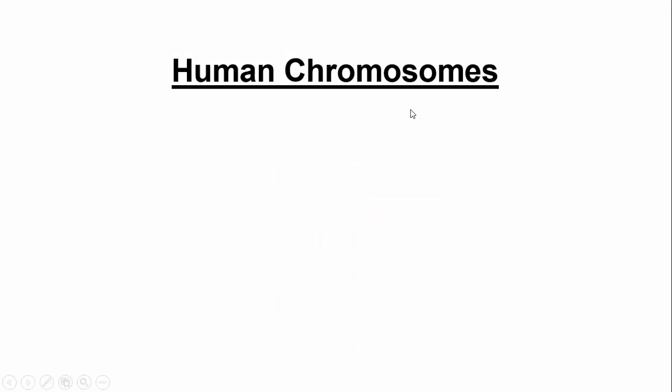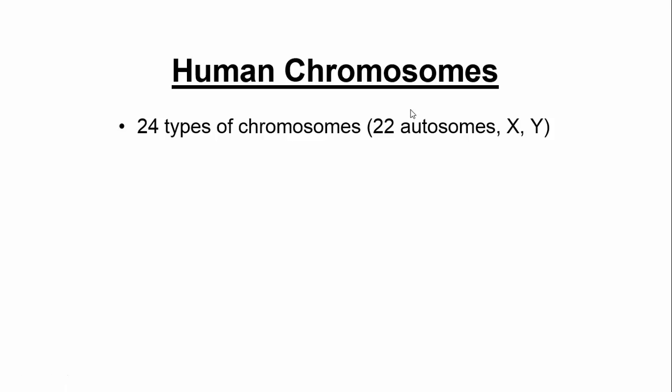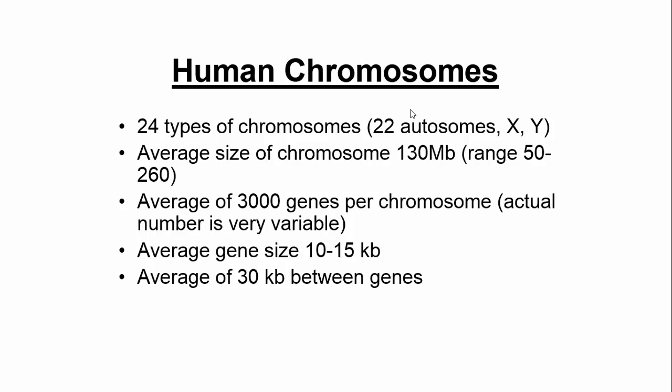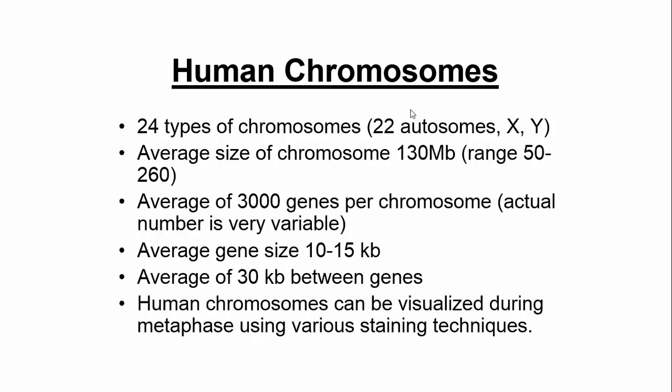Finally, just to review human chromosomes: humans have 23 types of chromosomes. Some people classify X and Y differently, saying X is the 23rd type and Y is the 24th, but most people say 23, treating X and Y as a pair. The average size of chromosomes, number of genes per chromosome, gene size, and distance between genes — none of these are information you need to memorize, except for the first bullet point: 23 pairs. The numbers are highly variable, so it's just a general rule of thumb.